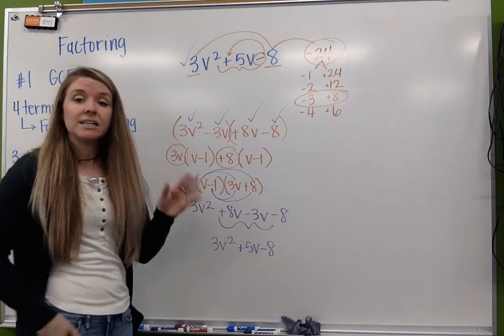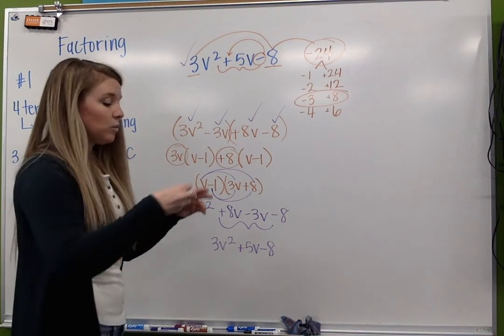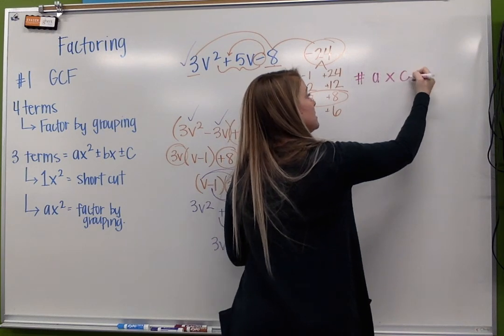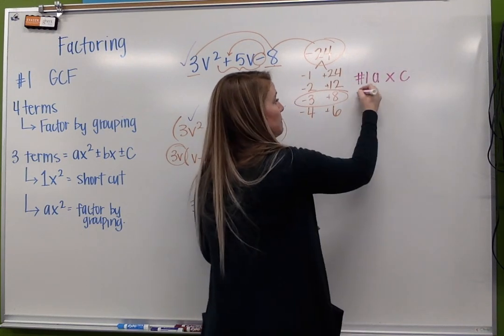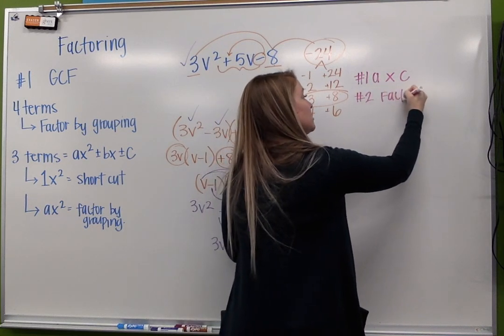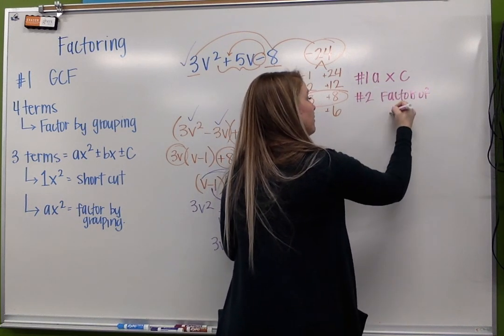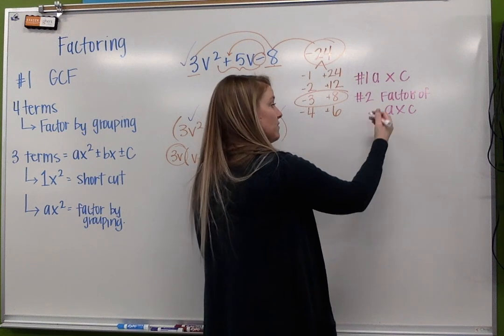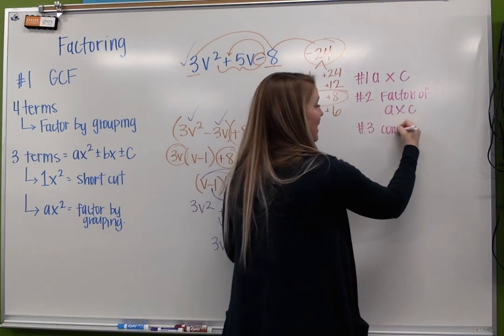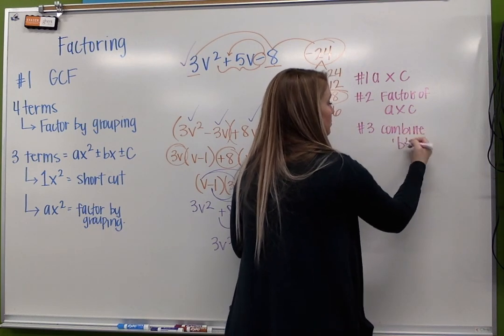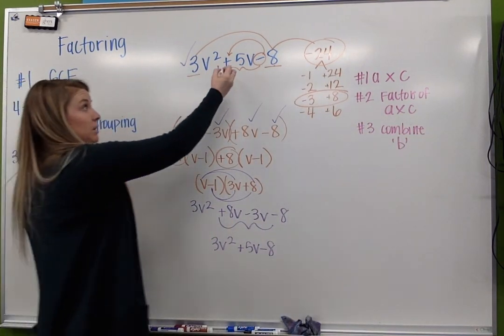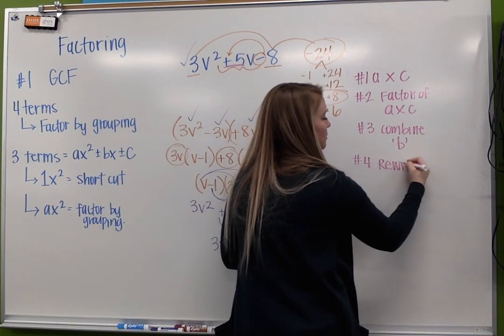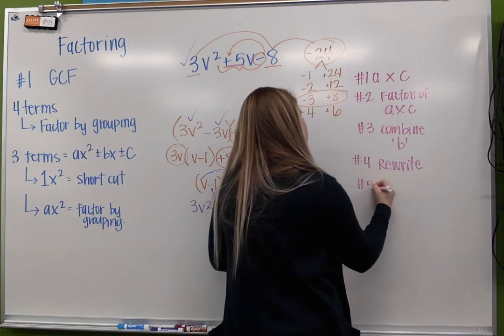So just to kind of summarize what we just did here, first thing we're going to do, so our first step, is that we're going to take a times c. That's my first step. And then we're going to find the factors of a times c. The factors of a times c, we're still going to figure out what combines to equal our b term. So remember that b term is our middle term here, in this case 5, and then we rewrite, and then we're ready to factor by grouping.